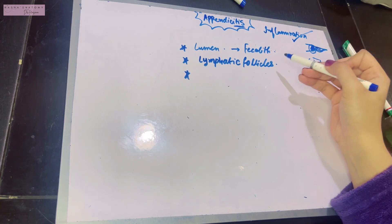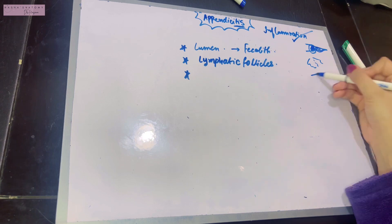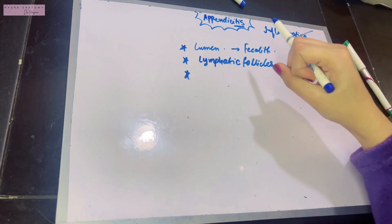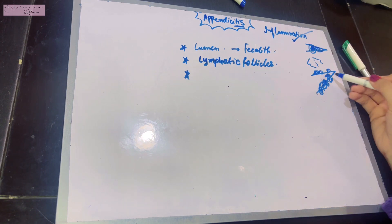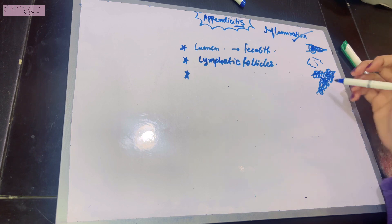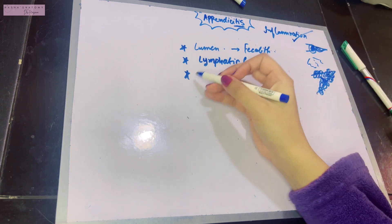If there's the wall of the appendix with many lymphatic follicles, and they undergo hyperplasia because of infection—lymphatic follicles fight off infection—so if there's even a single infection, these will undergo hyperplasia and become bigger. When these enlarge, they can cause obstruction of the lumen of the appendix, similarly leading to appendicitis.